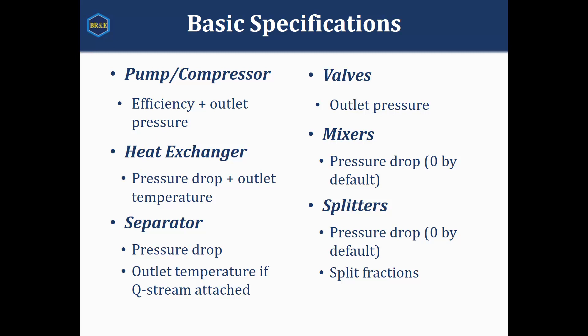If we want to control the temperature coming out of our separator — for example, like a condenser where you have both heat exchange and phase separation — you can attach a Q-stream directly into that separator, and then you could actually set the outlet temperature of your separator as well. For valves, we generally set an outlet pressure. Mixers and splitters also need a pressure drop, and those are set to zero by default. In the splitter's case, we also need to set a split fraction so we can tell PROMAX what percentage of the flow is going in which direction.